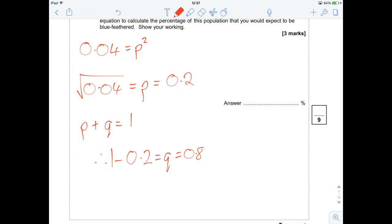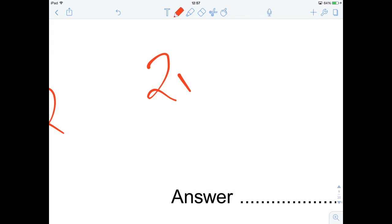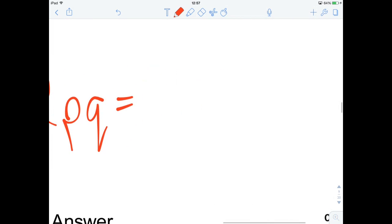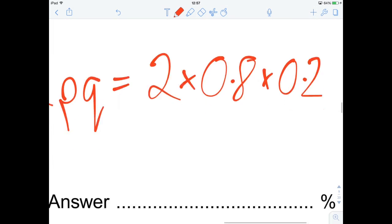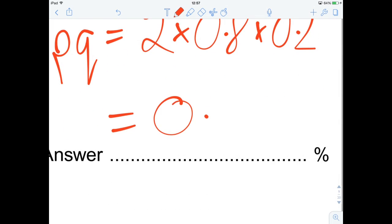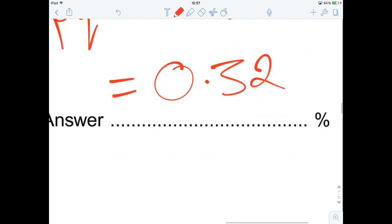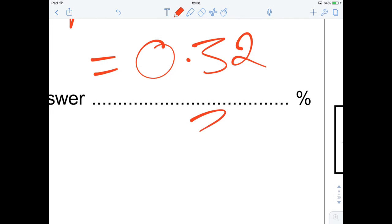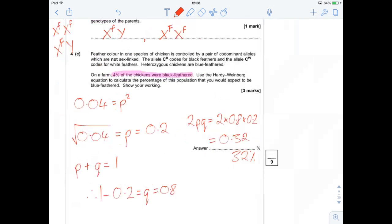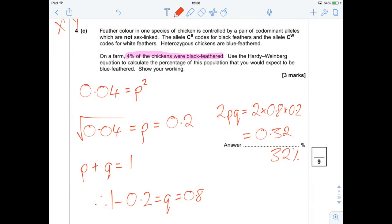And then, 2pq is what we're looking for, which is our heterozygous, equals 2 × 0.8 × 0.2, which should equal 0.32. So that's 32%. And that's quite a nice Hardy-Weinberg question there.